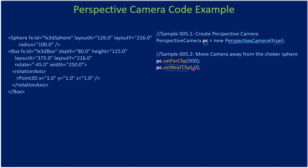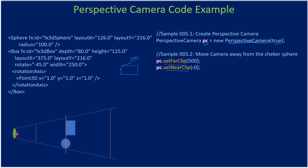The near clip is at zero on the Z plane — whether minus zero or plus zero doesn't matter — and the far clip is set to 500 units in the depth direction. So if this is the perspective camera, the near clip is at zero and the far clip is at 500.